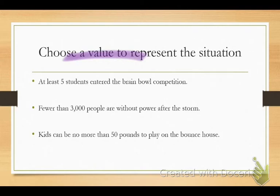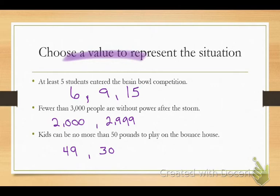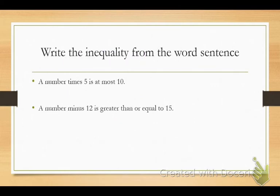Give me some numbers. At least 5 students entered the competition. Give me a number. At least 5. 6. What's another one? 9. 15. Fewer than 3,000 people. How about 2,000? Yes. It's got to be less. How about 2,999? I love how y'all are pushing the limits. Kids can be no more than 50 pounds. So how much can they weigh? 49. They can't weigh negative? I'm going to mark that wrong. It's got to be realistic.